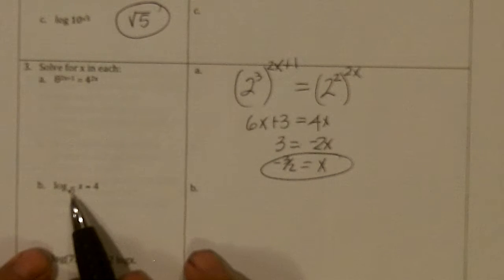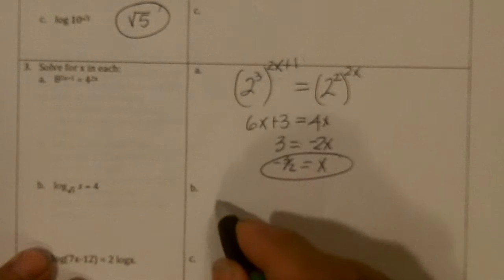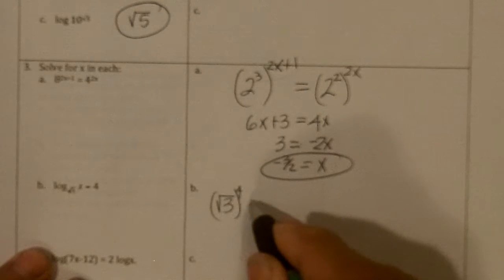This says to what power to take the square root of 3 to get x? You take the square root of 3 to the 4th to get x.